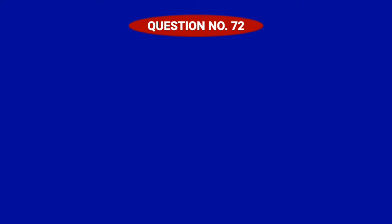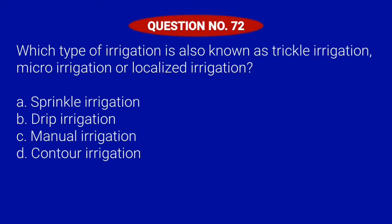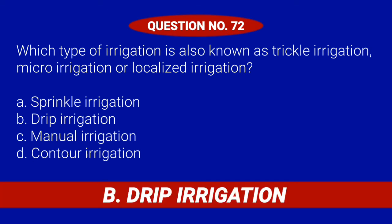Question number 72. Which type of irrigation is also known as trickle irrigation, micro-irrigation, or localized irrigation? Letter A: Sprinkle irrigation. Letter B: Drip irrigation. Letter C: Manual irrigation. Or Letter D: Contour irrigation. Correct answer is Letter B: Drip irrigation.